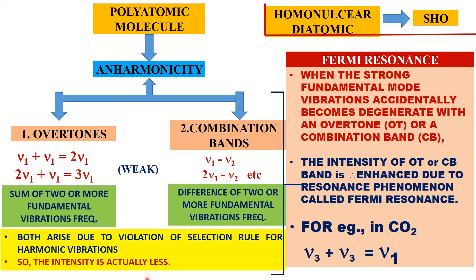Why? What is Fermi resonance? Overtones are ν₁ plus ν₁, i.e., 2ν₁; 3ν₁ are overtones. When the strong fundamental mode of vibration accidentally becomes degenerate with an overtone — when the fundamental mode ν₁ and the overtone have the same energy — then the intensity is enhanced.